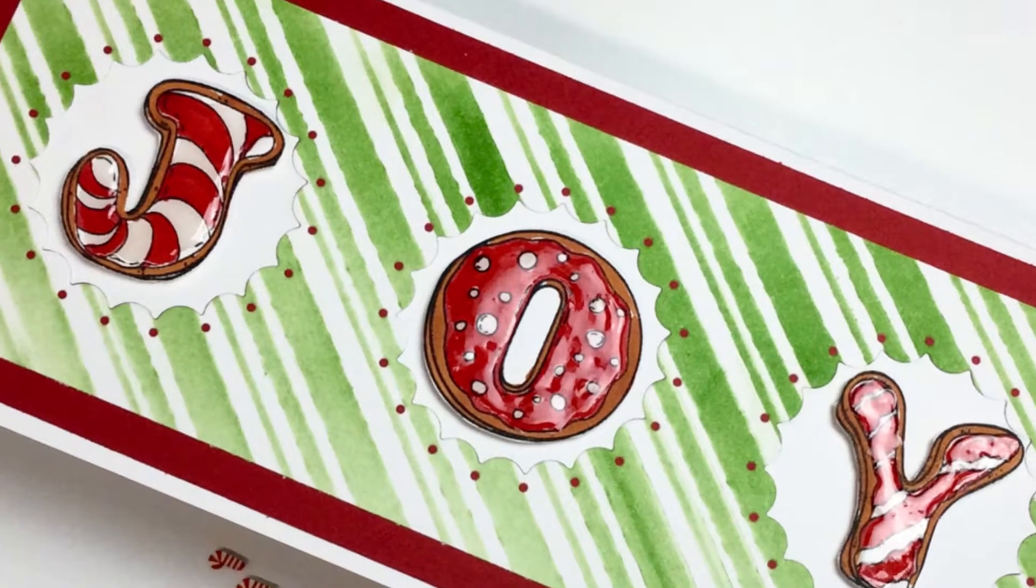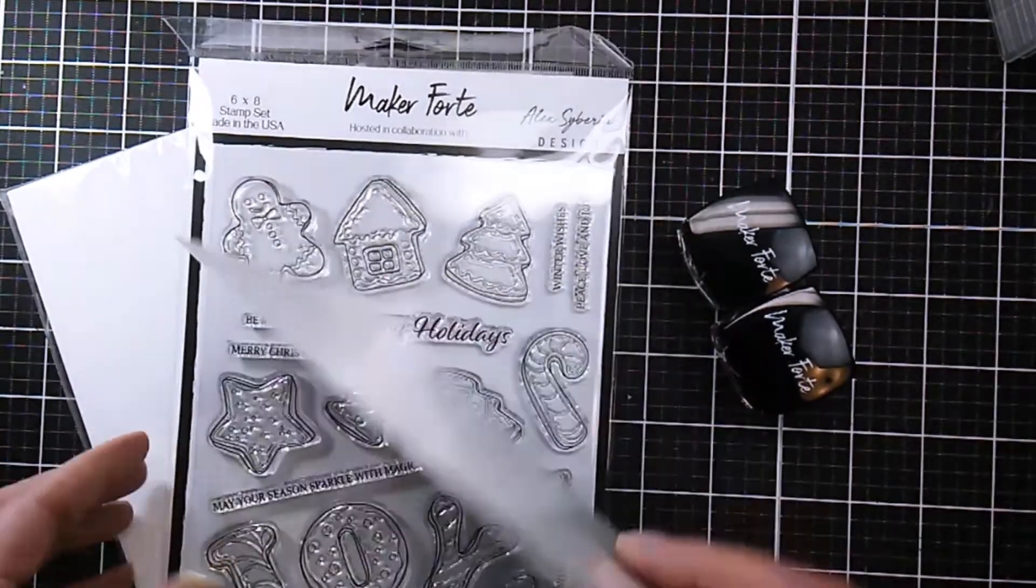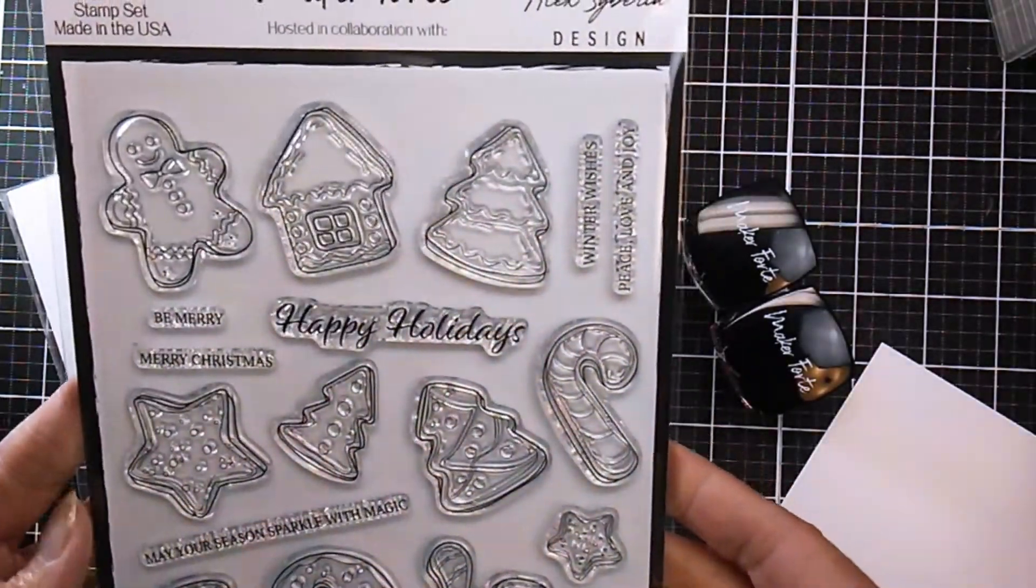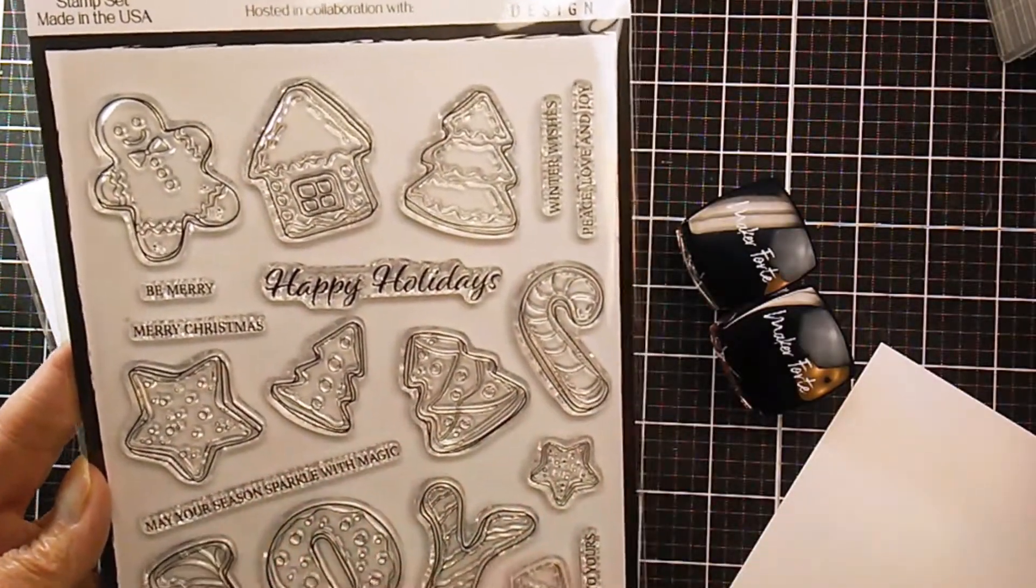I fell in love with this cookie stamp from Alex Siberia and just thought it was darling. It's got all kinds of cookies there and what I ended up doing was stamping the joy in black ink and coloring it with Copics.